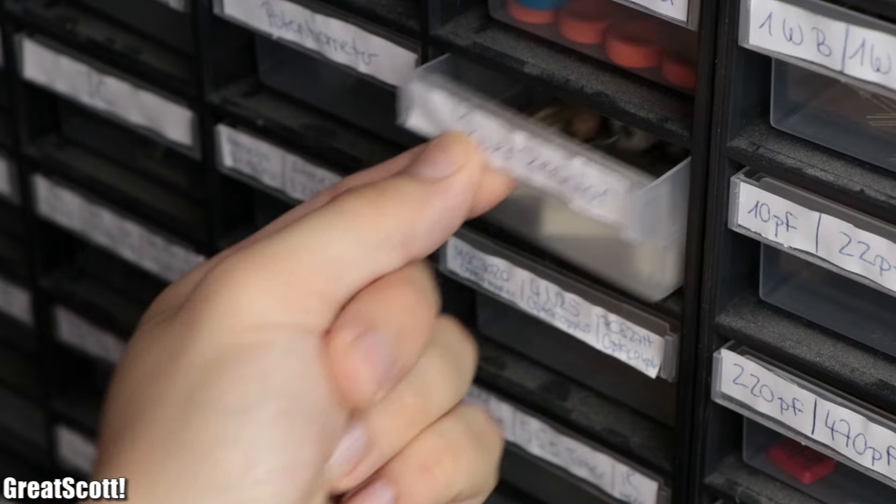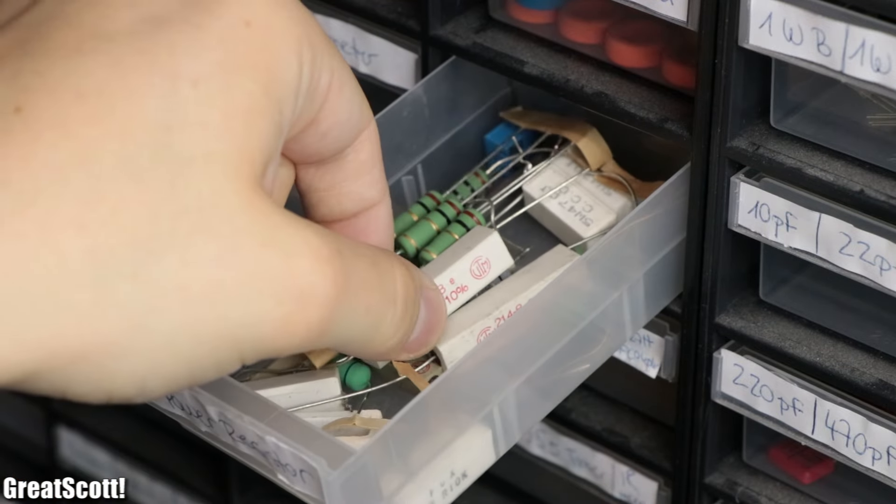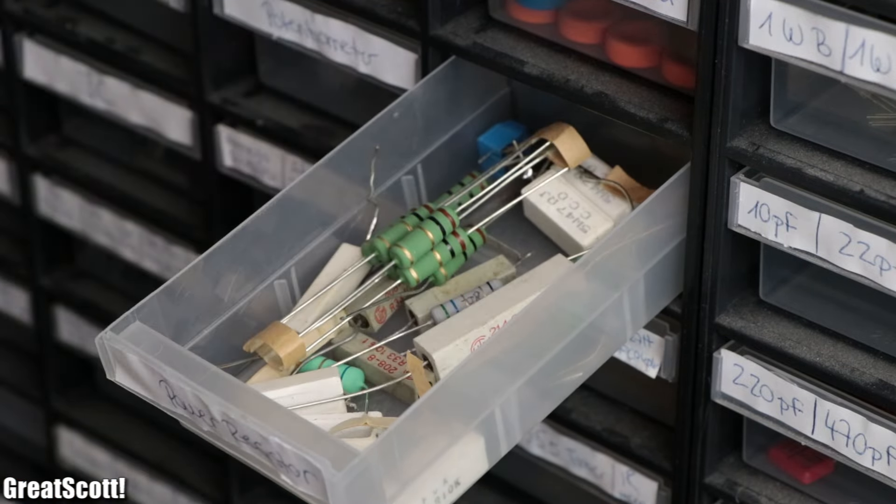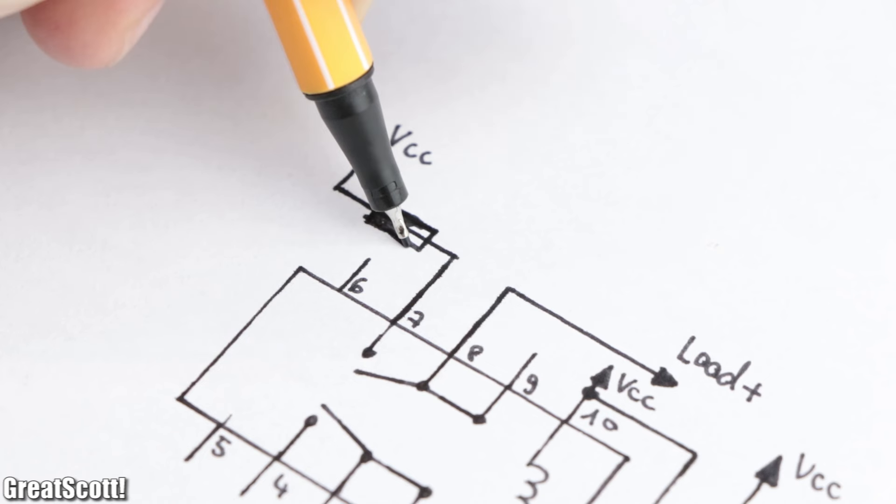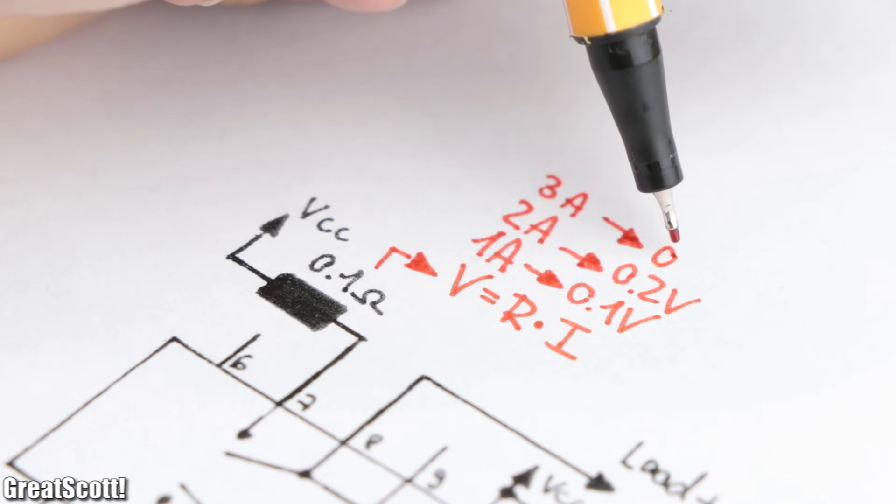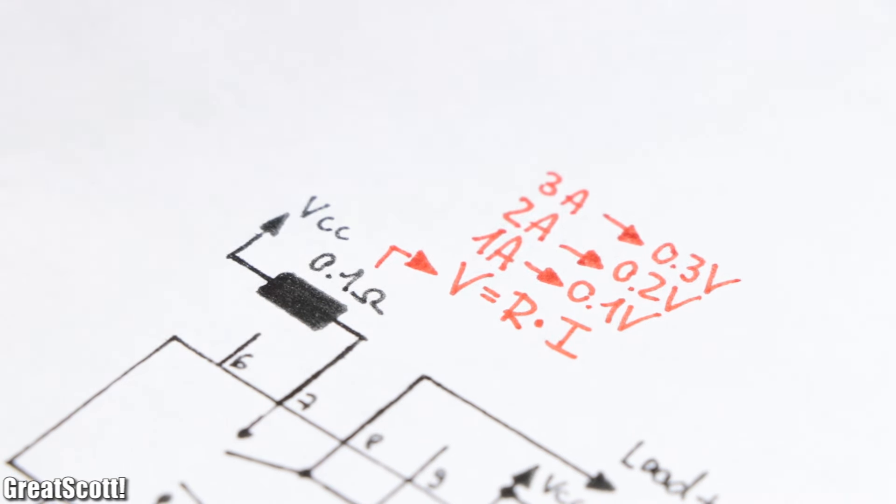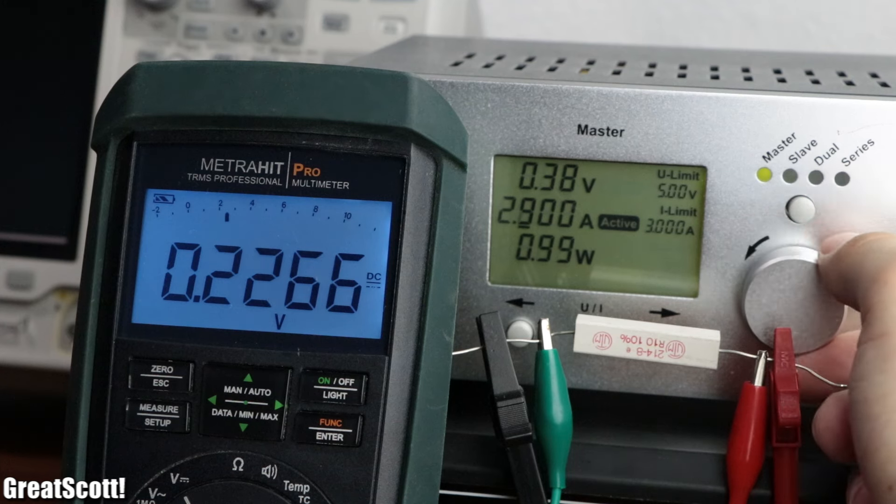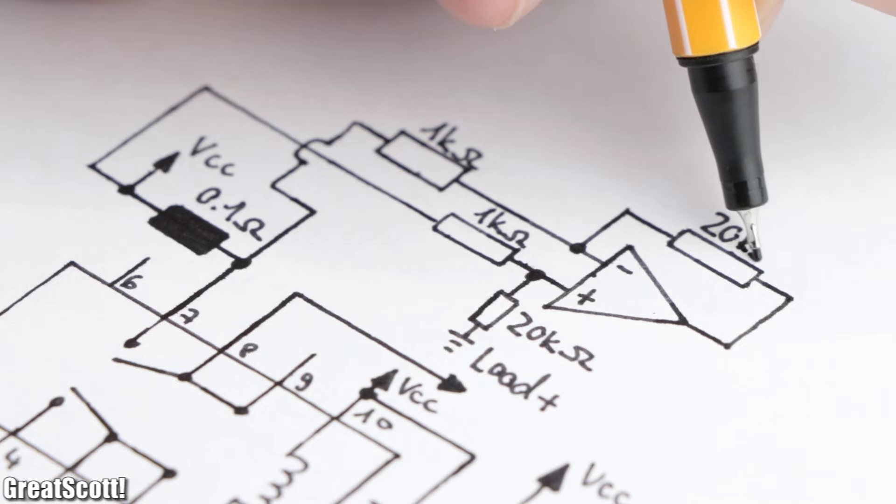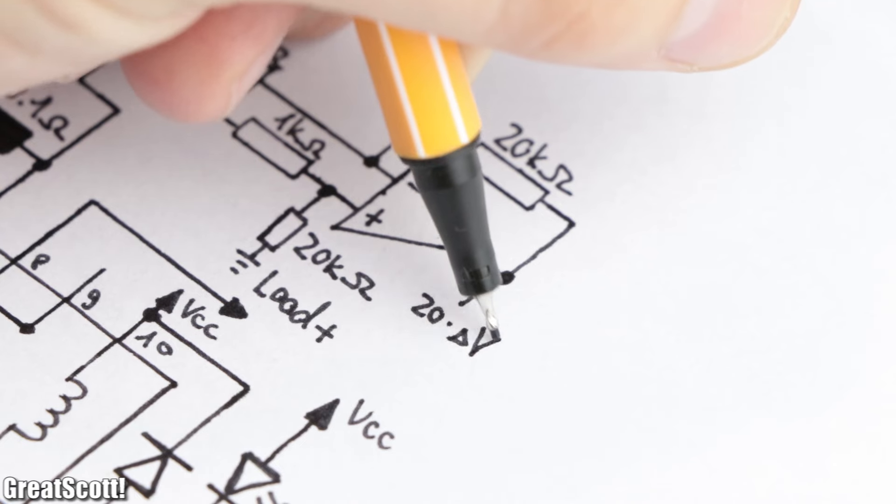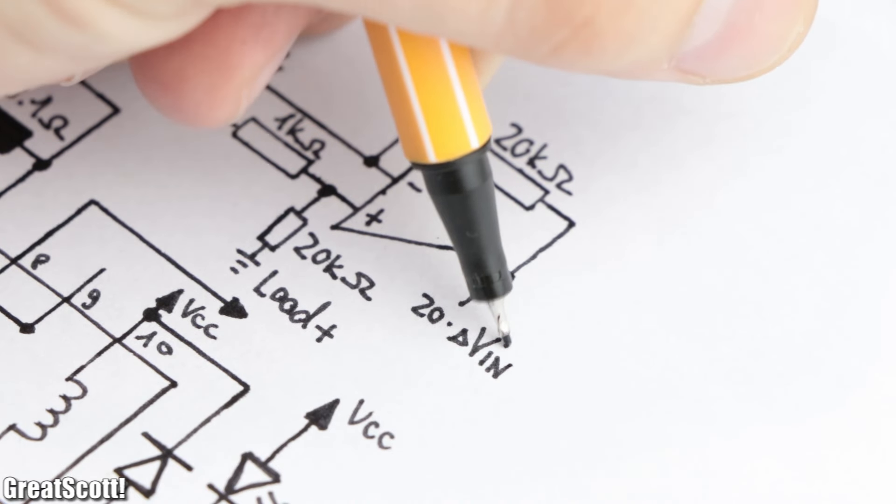To detect the overcurrent though, we need to use a low value power resistor like the 0.1 ohm 5 watt one. By simply adding it in series between the supply voltage and the first relay contact, it creates a voltage drop proportional to the flowing current. But since this voltage drop is rather low, we firstly have to utilize an op-amp in a differential amplification configuration to get a bigger voltage that we can work with.